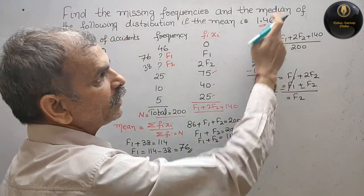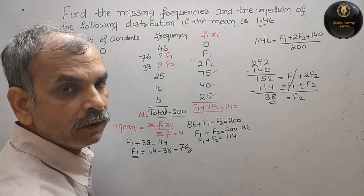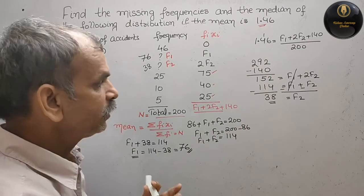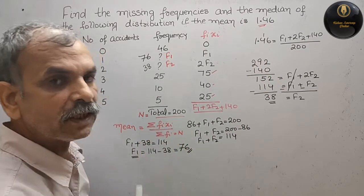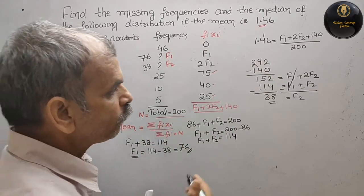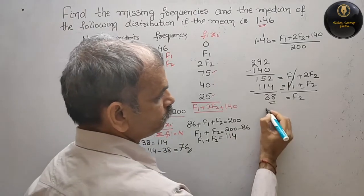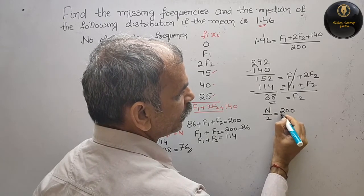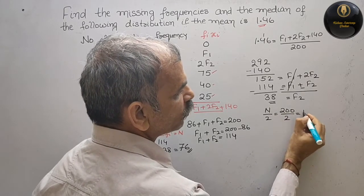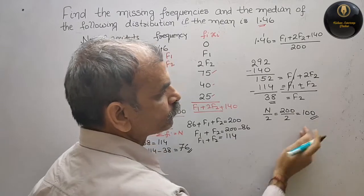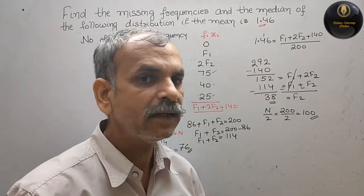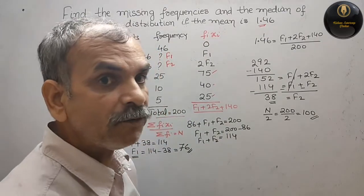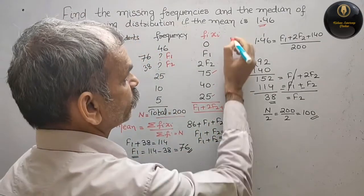Now we have to find out the median. For median we have only one thing, what is that? Only n. We will start with n only. So what is your n by 2 now? n by 2, that is equal to 200 by 2, that is equal to 100 now. But this 100, we have to see where it is. We have to see in cumulative frequency. So now we will write the cumulative frequency. Here CF.